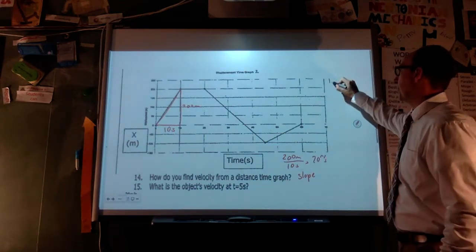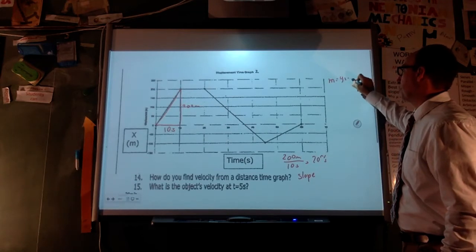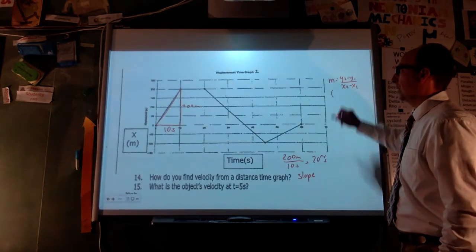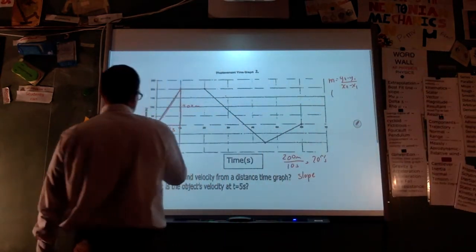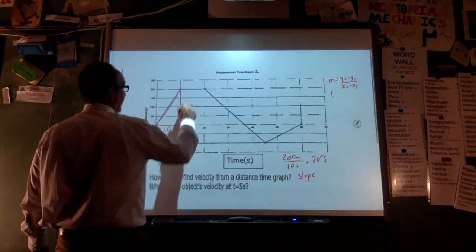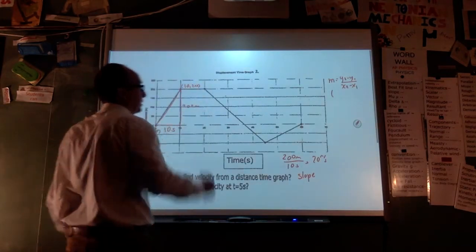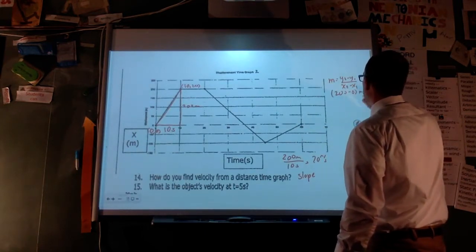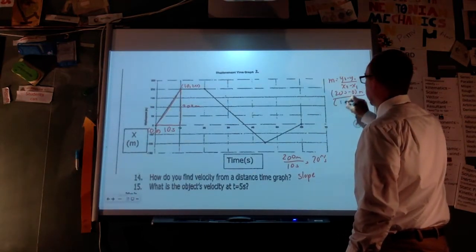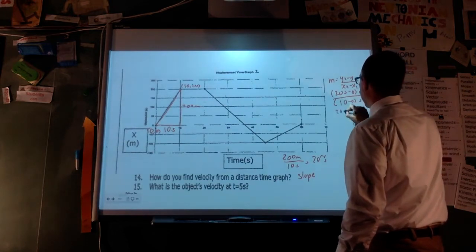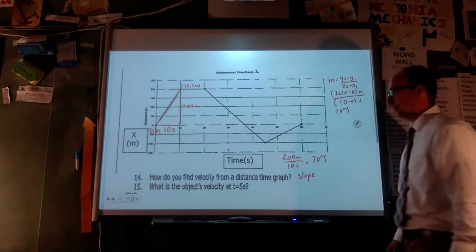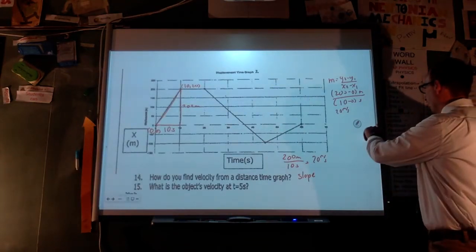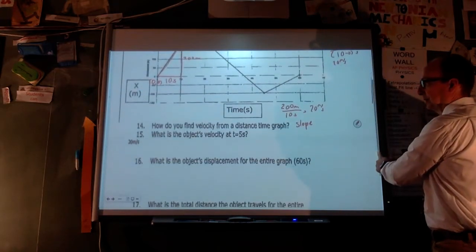You could also use the slope formula — I'll put that on the board Wednesday. You need two points: this segment starts at (0, 0) and ends at (10, 200). So slope = (200 − 0) ÷ (10 − 0) = 20 meters per second. Same answer either way.